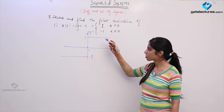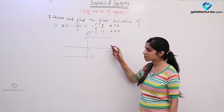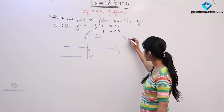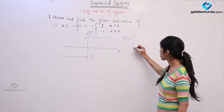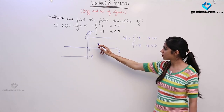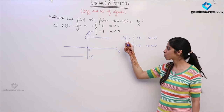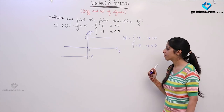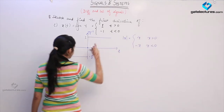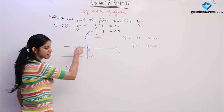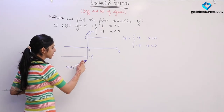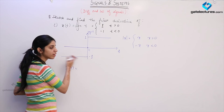This function is defined as 1 for all positive values of t and minus 1 for all negative values of t — it is a special function, the signum function. It is actually related to the mod function: mod(x) is written as x when x greater than 0 and minus x when x less than 0. This is what the signum function signifies. You are required to find the derivative of this function.